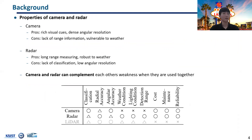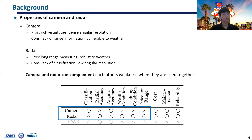Camera and radar have their pros and cons. The RGB pixels of the camera provide rich contextual information and dense angular resolution. However, pixels do not directly provide distance information, and the camera is not robust to weather or lighting conditions. On the other hand, radar can measure long distances even in harsh weather conditions. As shown in the table, the properties of camera and radar are complementary, and you can expect a huge performance improvement when the two sensors are used together.